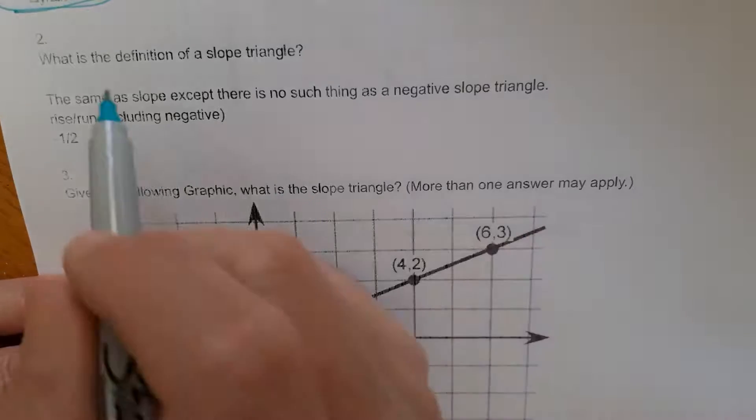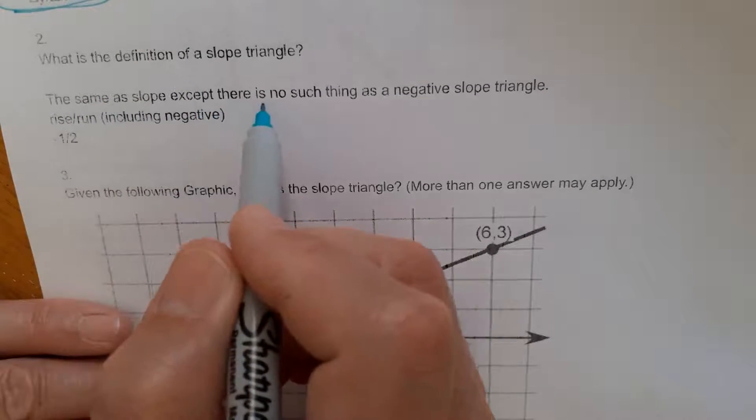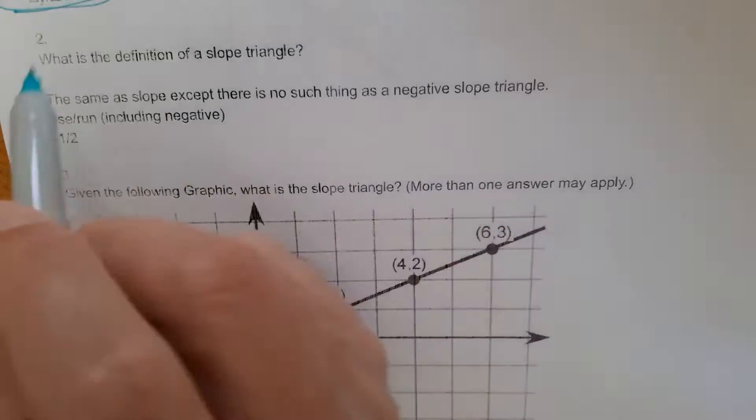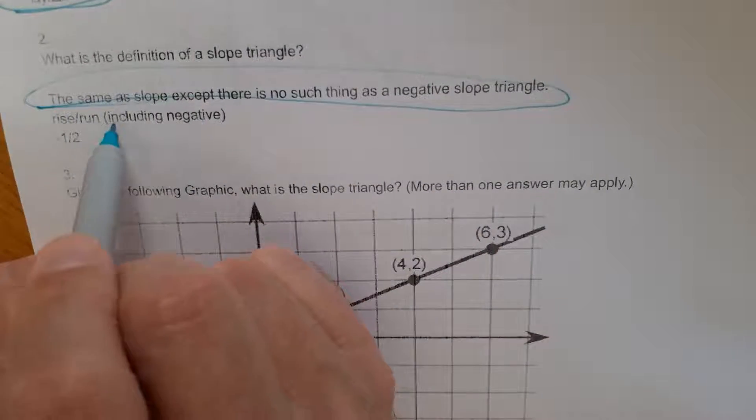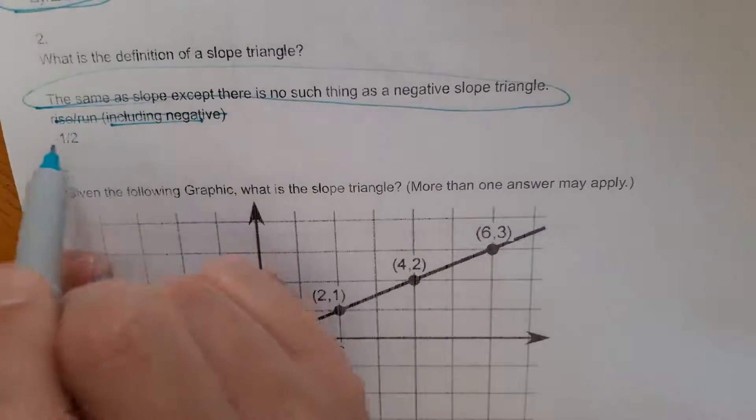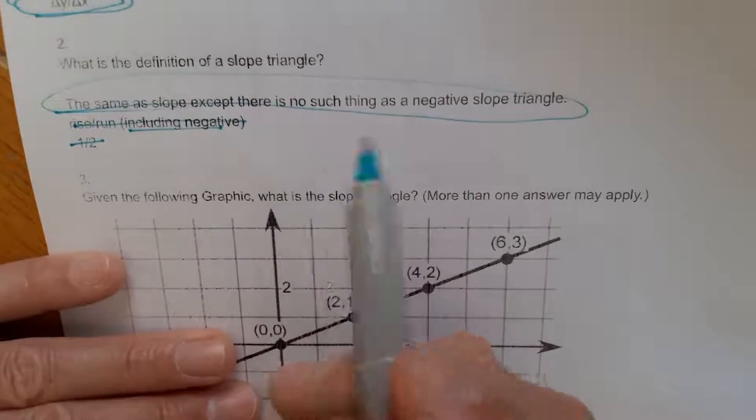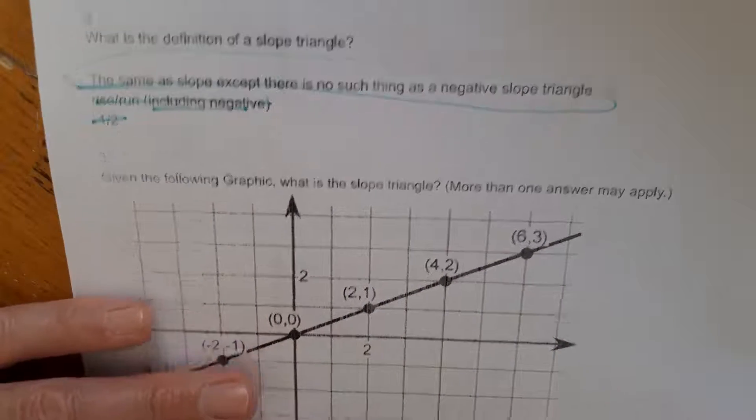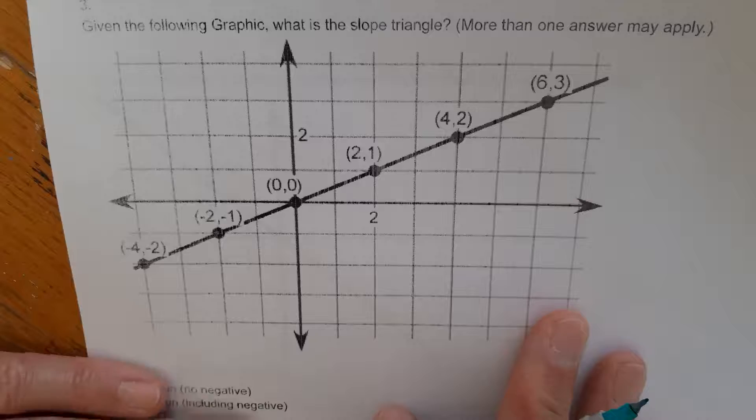Let's see what else we got. What's the definition of a slope triangle? Slope triangle is the same thing as slope, except there is no such thing as a negative slope triangle. So it's going to be just like slope. So if this one says including negative, it's out. And if this one has a negative, it's out. That's the big difference between a slope triangle and slope. There is no negative to a slope triangle.